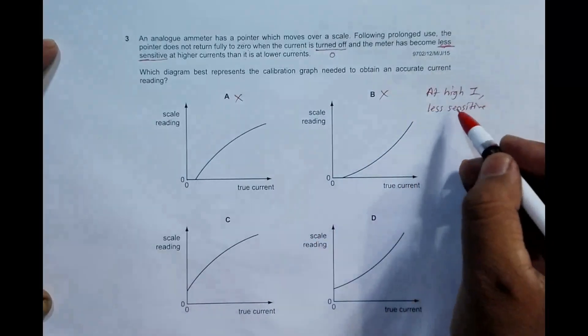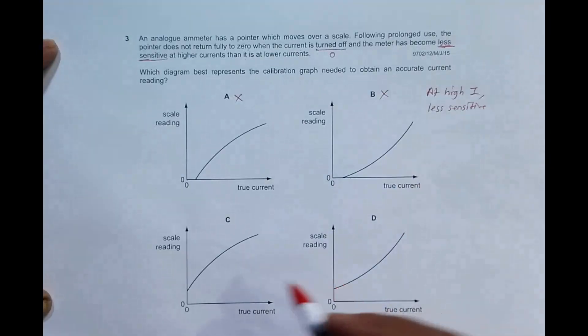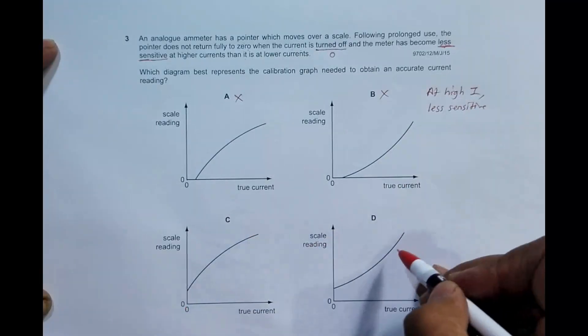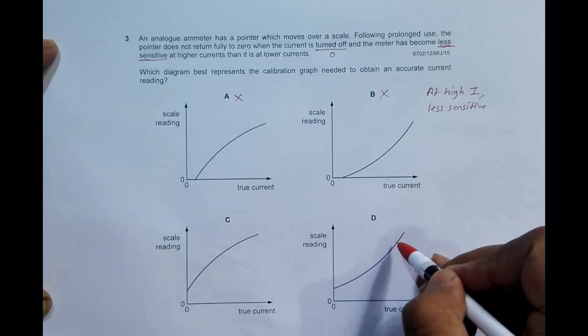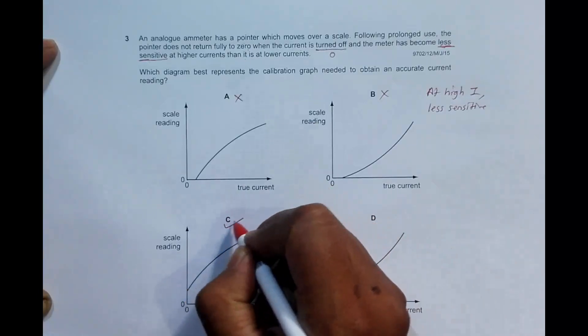In these two graphs, here at high currents the slope is less, that means it is showing less change. Here the slope is high, which means it is showing more change. So going through these things, choice C is the proper choice and D also disqualifies.